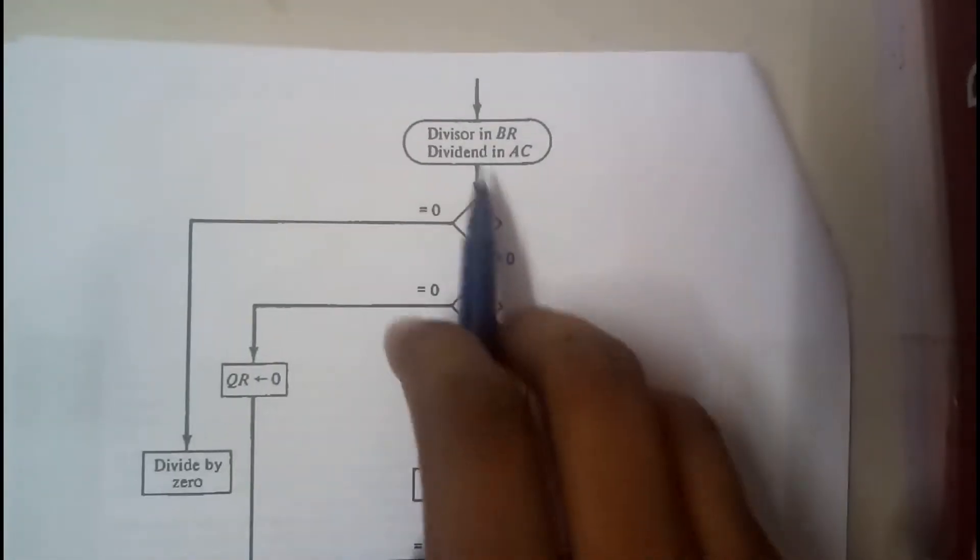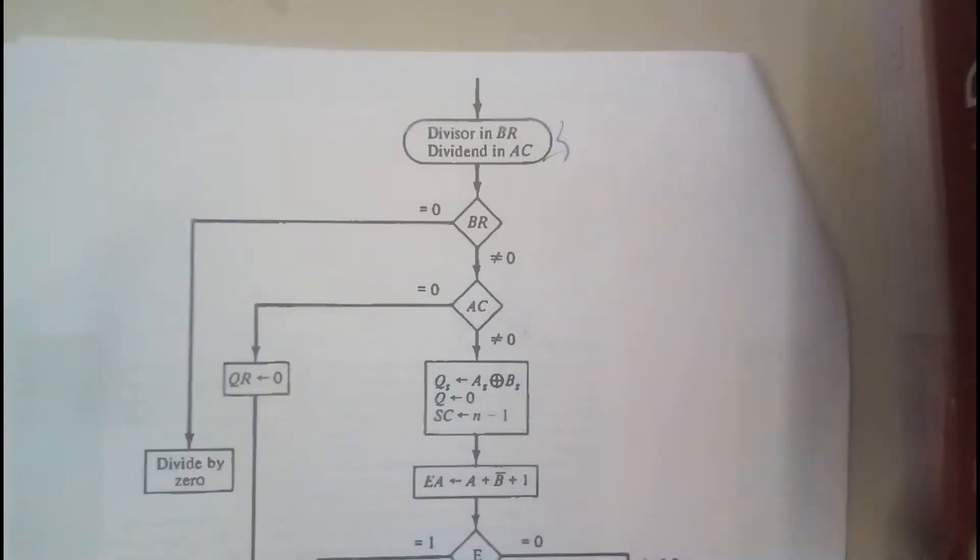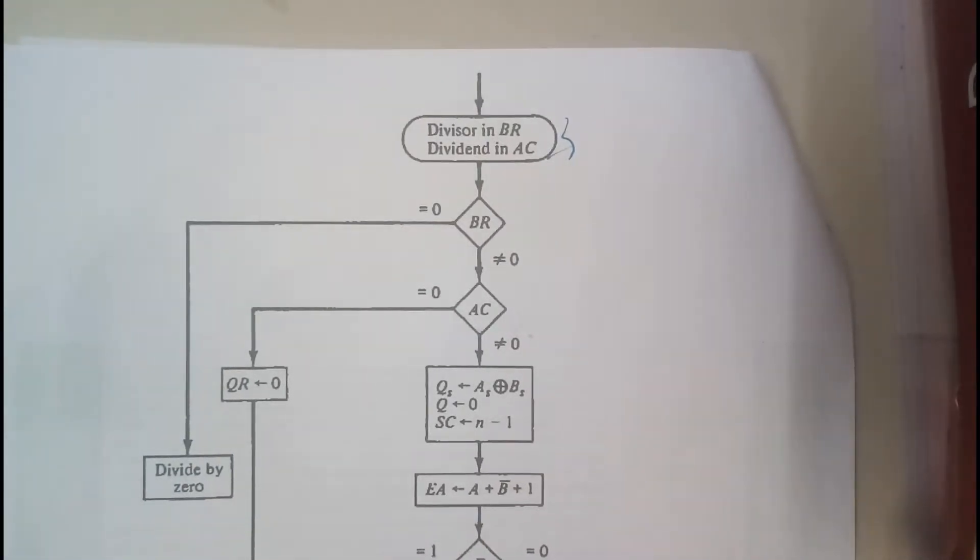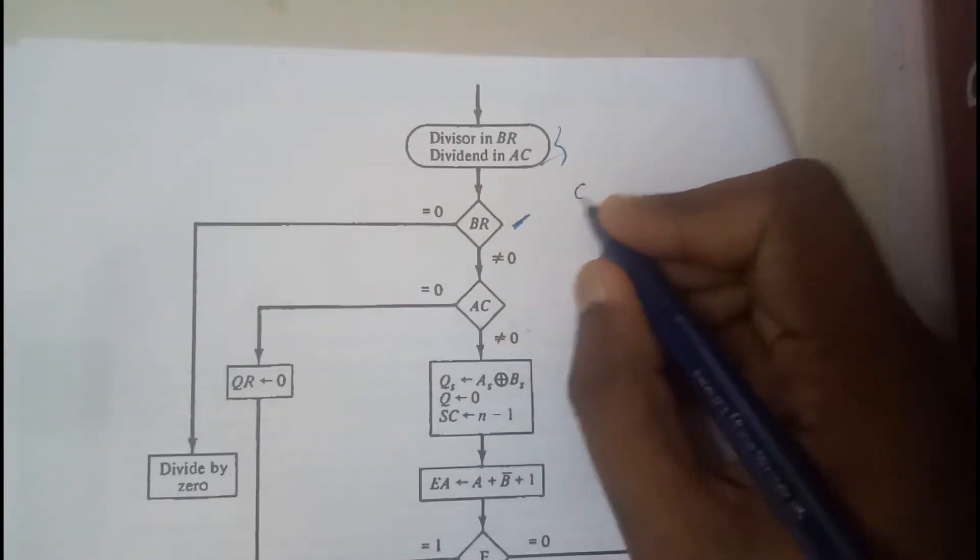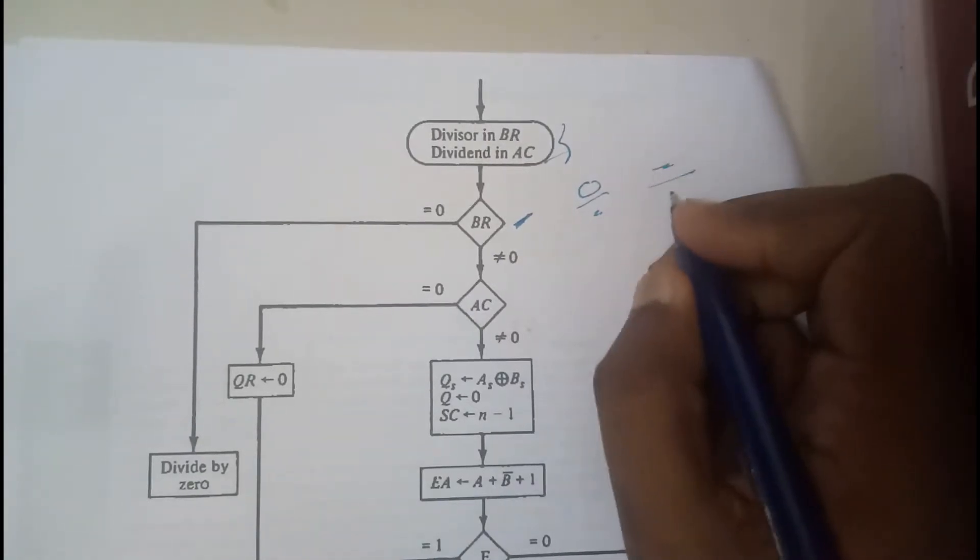Division in BR - divisor is BR and dividend is AC. If any one of them is zero, is there any necessity to do the code or program? Zero by something is possible, but something by zero is not possible.